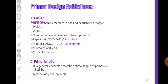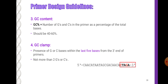Primer length: it is generally accepted that the optimal length of a primer is 18 to 25 bp — not too long nor too short. GC content: the percentage of G and C bases in the primer as a percentage of total bases should be 40 to 60 percent. GC clamp: the presence of G or C bases within the last five bases from the 3-prime end of primers should be no more than 2 G or C bases.